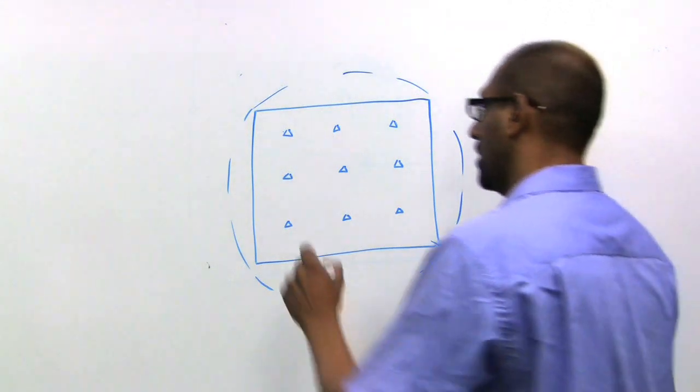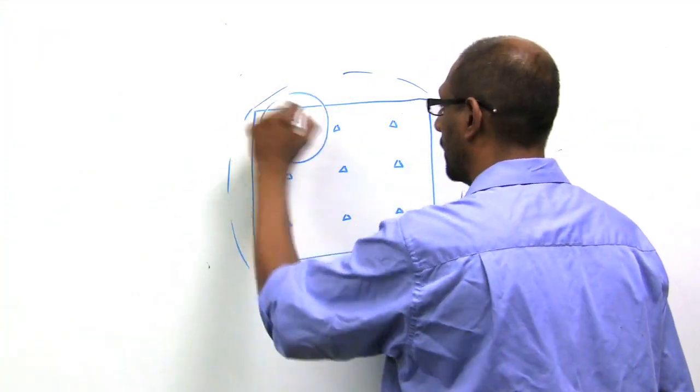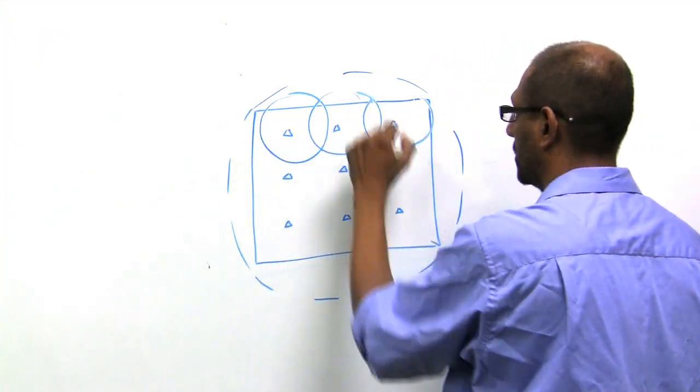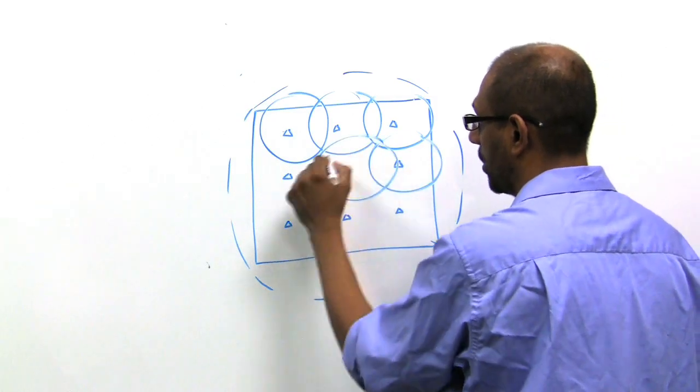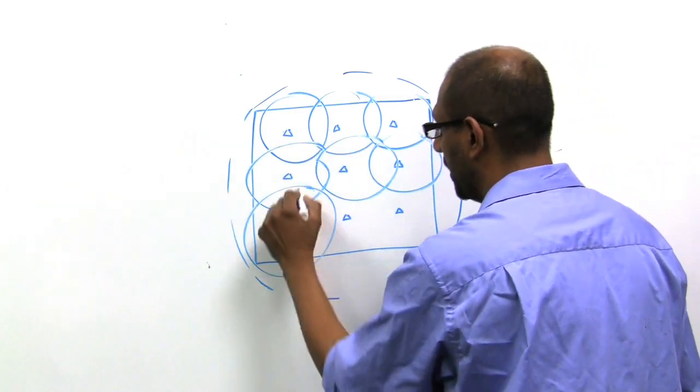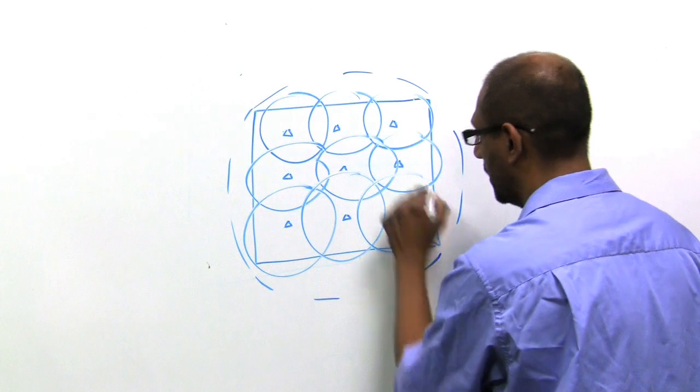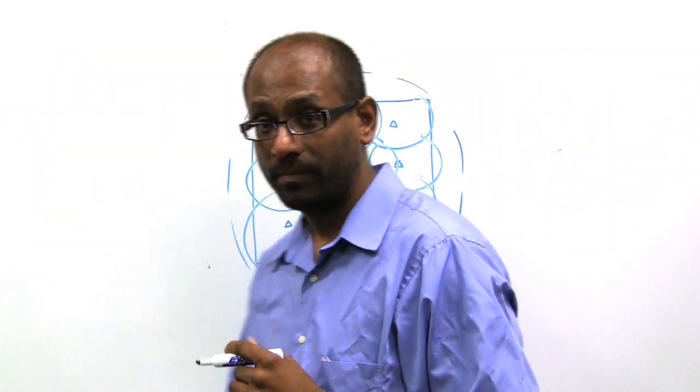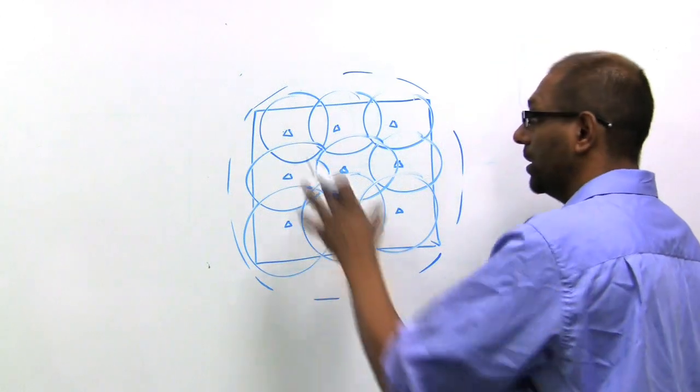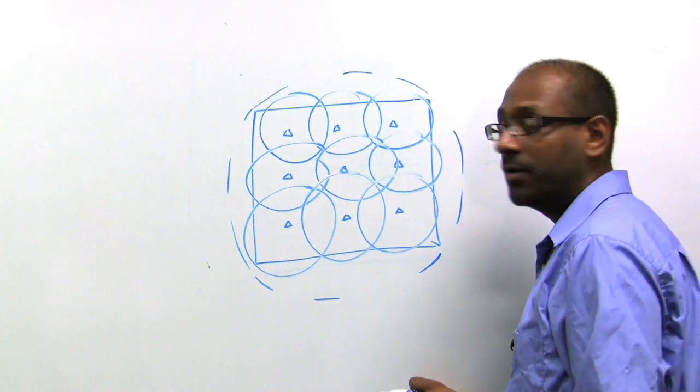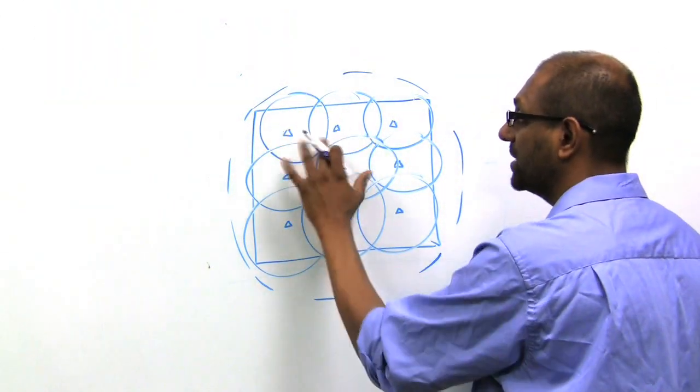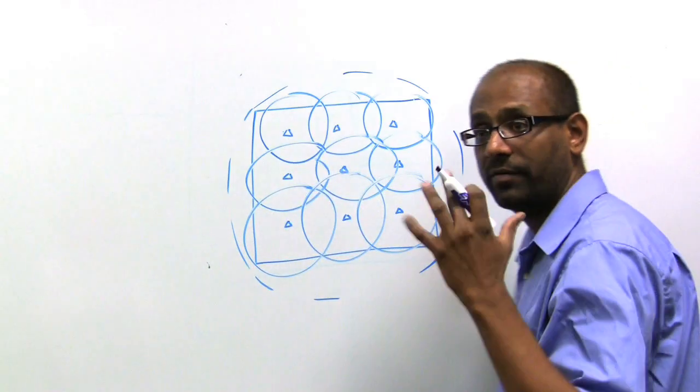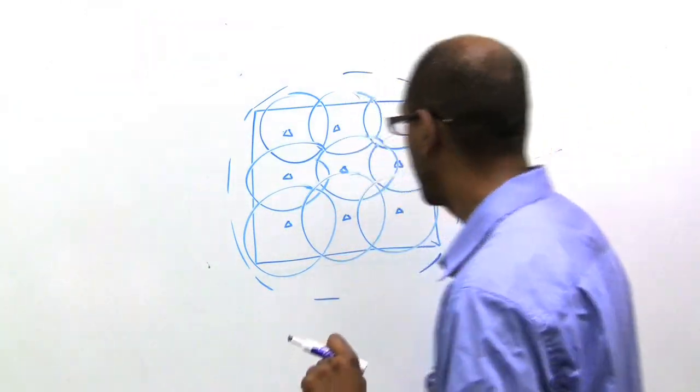The question here is, assuming coverage as follows, and obviously I'm drawing these as circles for simplicity. In a real-world environment, these are not required to be circles. As a matter of fact, with Meru, we don't care what they are. So let's assume this is the coverage. And notice from the client perspective, you don't see these cell boundaries, right? Because they all advertise the same BSSID.